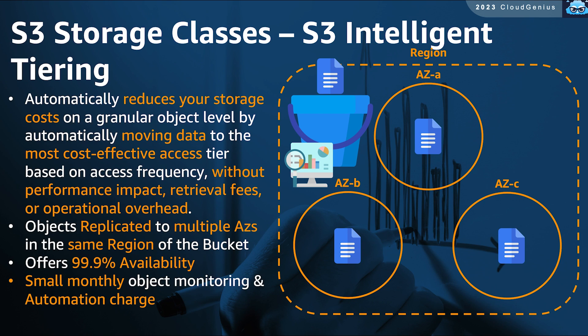S3 Intelligent Tiering is a storage class that will reduce your storage costs by automatically moving your data from one storage tier to another based on the access patterns, with no performance impact, no retrieval fees, or any added operational overhead. You just pay, besides the optimized storage costs, an extra small monthly monitoring fee.